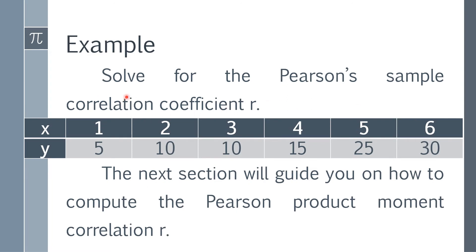As you can see, we are asked to solve the Pearson's R or Pearson sample correlation coefficient. Here we have x: 1, 2, 3, 4, 5, and 6. And for y, we have 5, 10, 10, 15, 25, and 30. The next section will guide us on how to compute the Pearson product moment correlation.